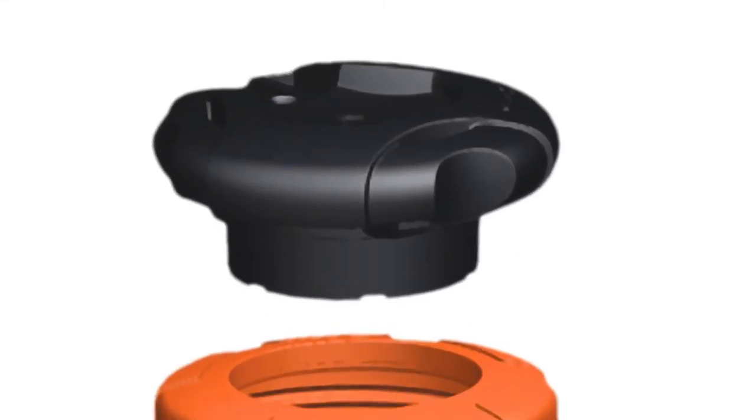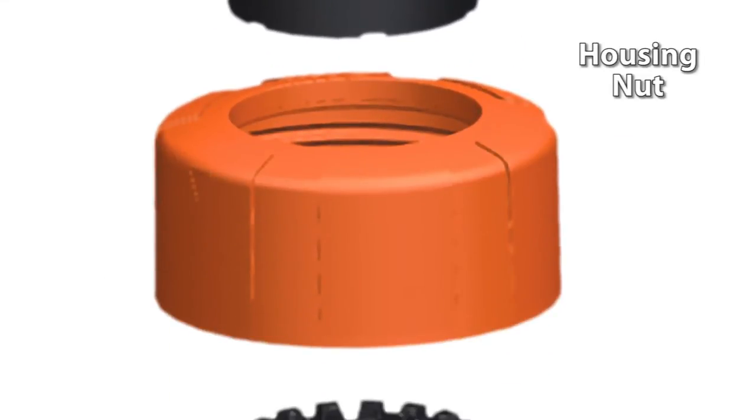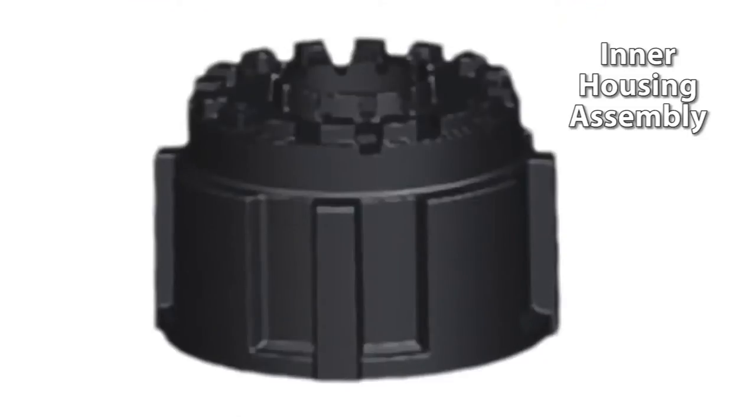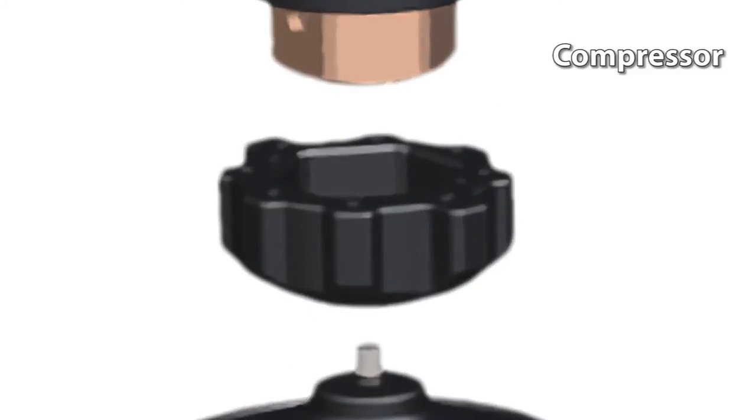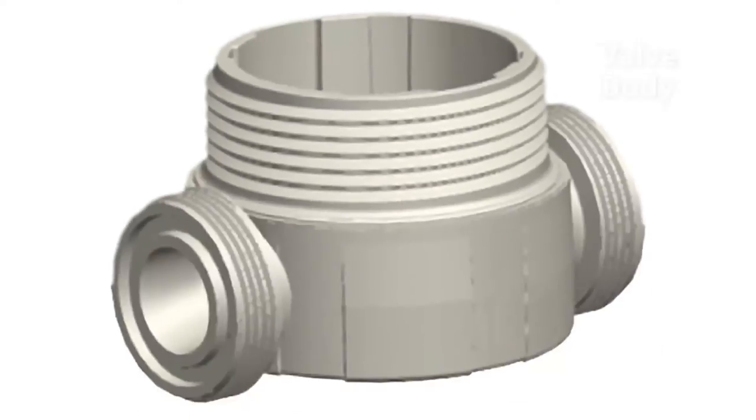First you have the handle, then the housing nut, the inner housing assembly, spindle assembly including the diaphragm holder, the compressor and the diaphragm. Below all of these components is the valve body itself.